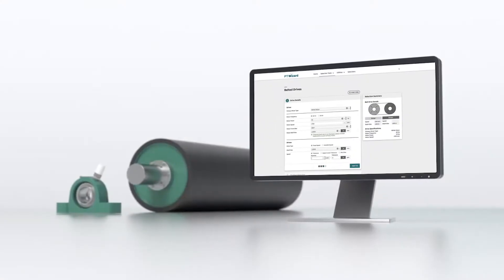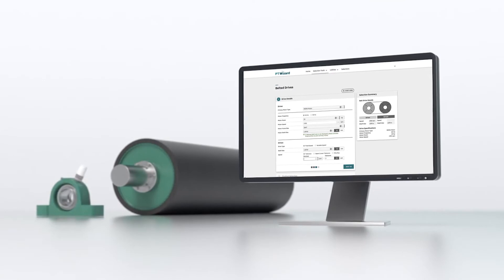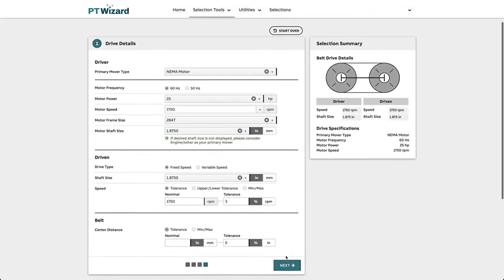It is highly recommended to use Dodge PT Wizard, Dodge's easy-to-use online selection program to configure and receive the exact tensioning requirements for your belt drive.